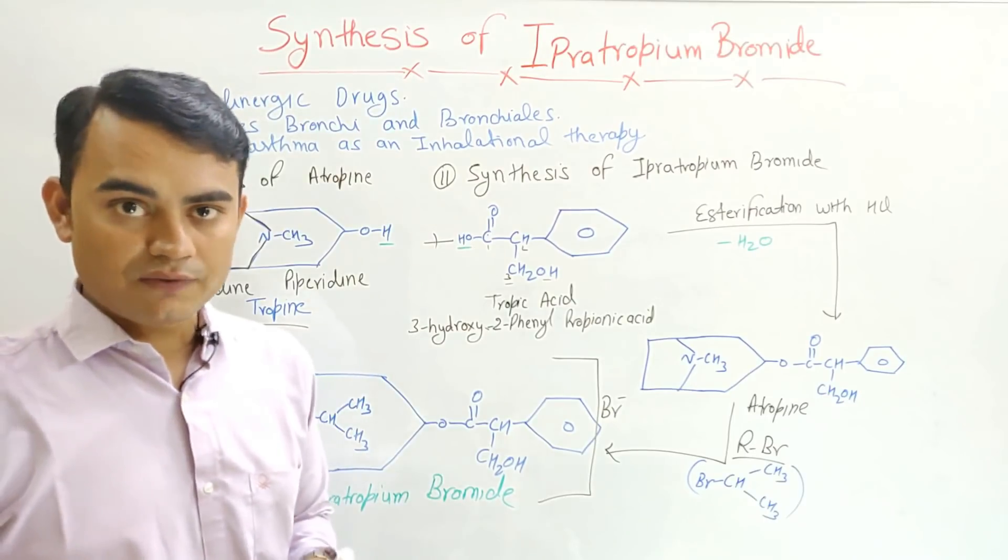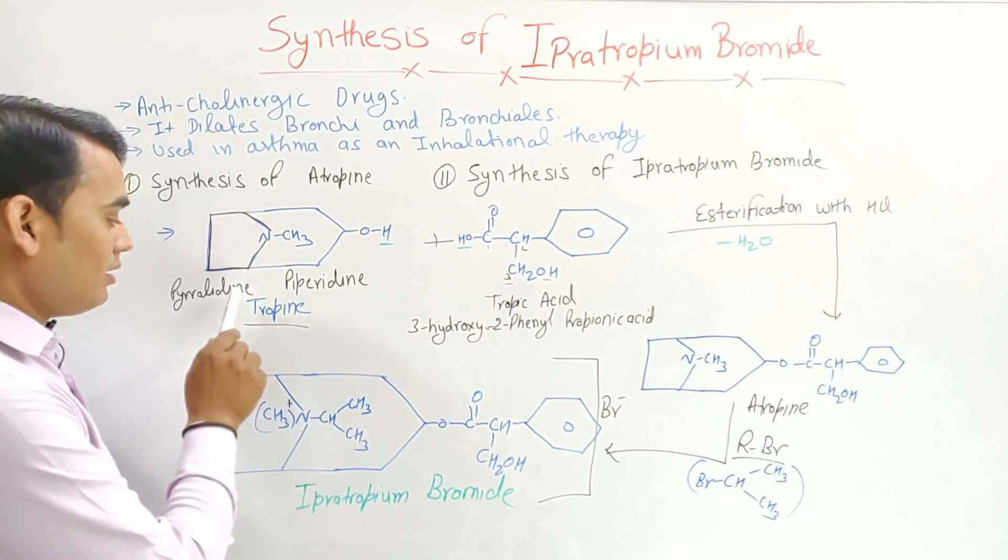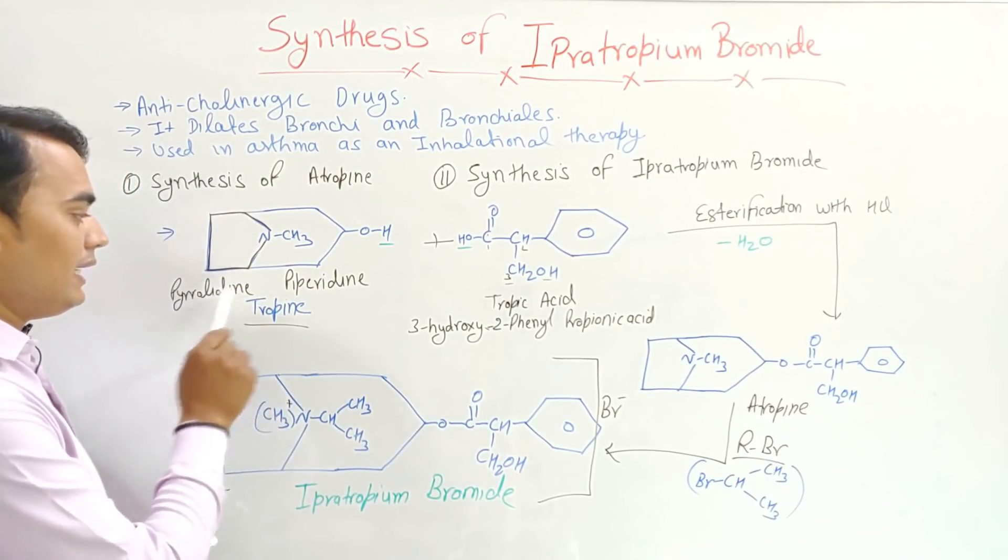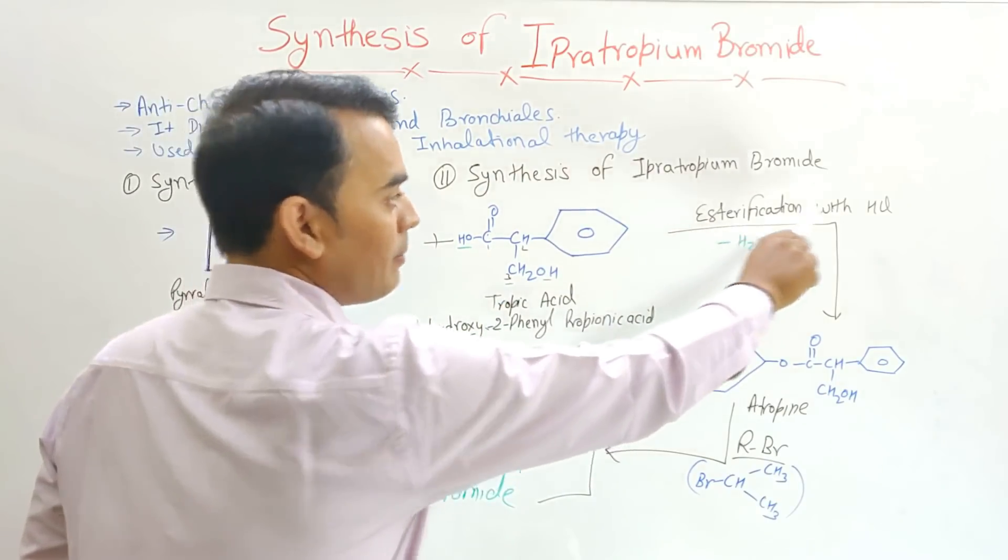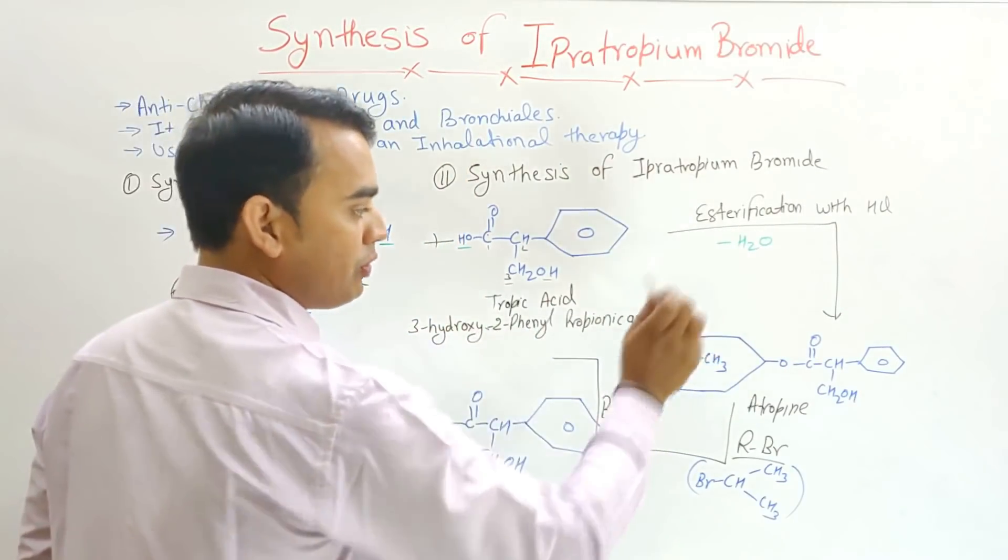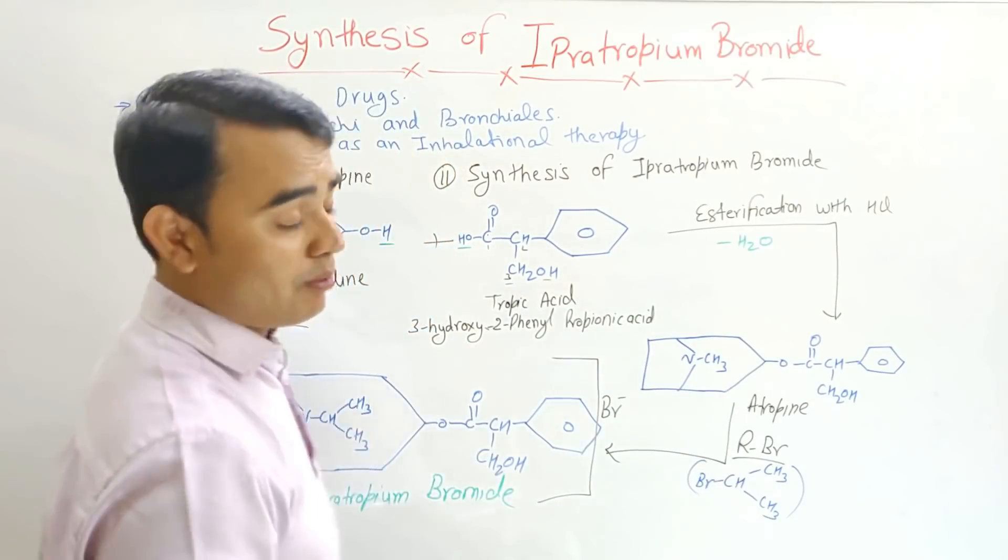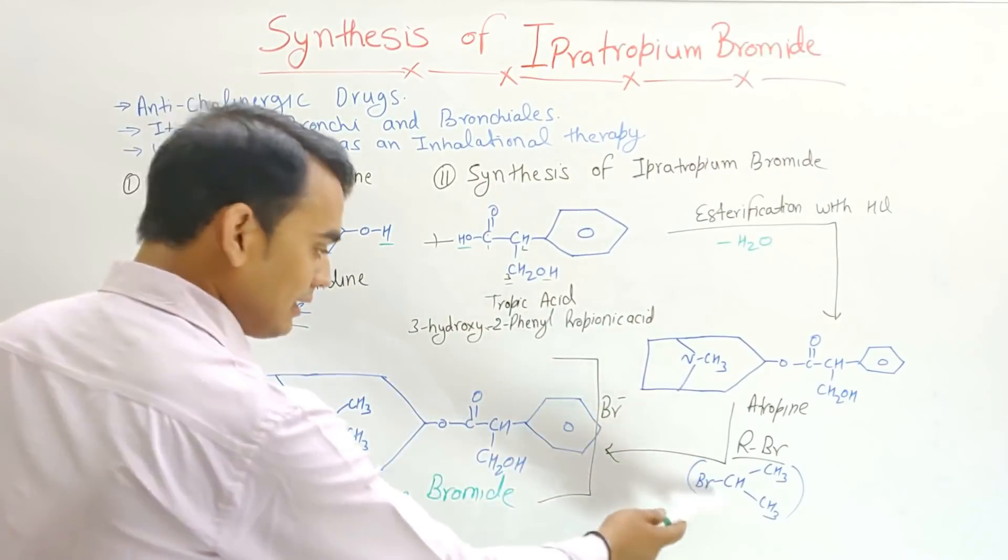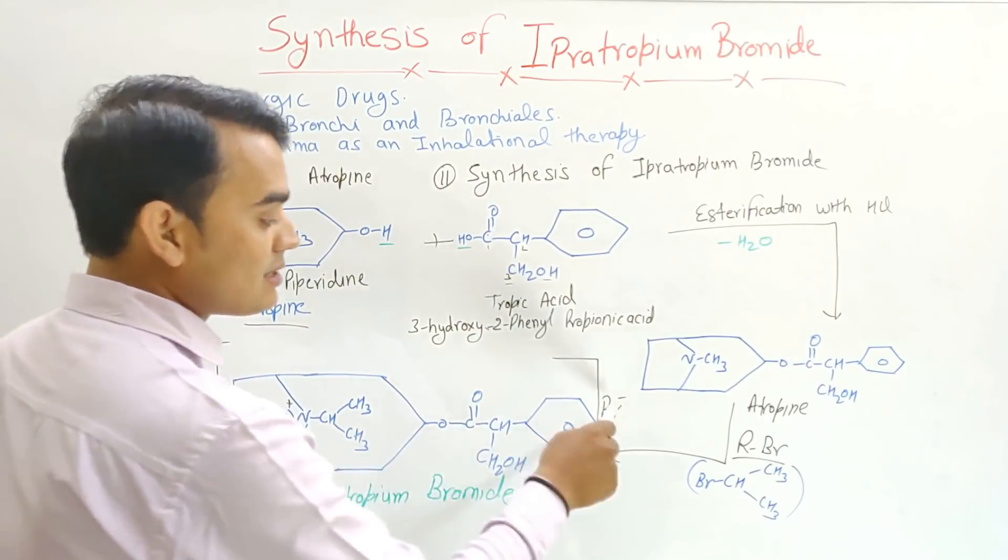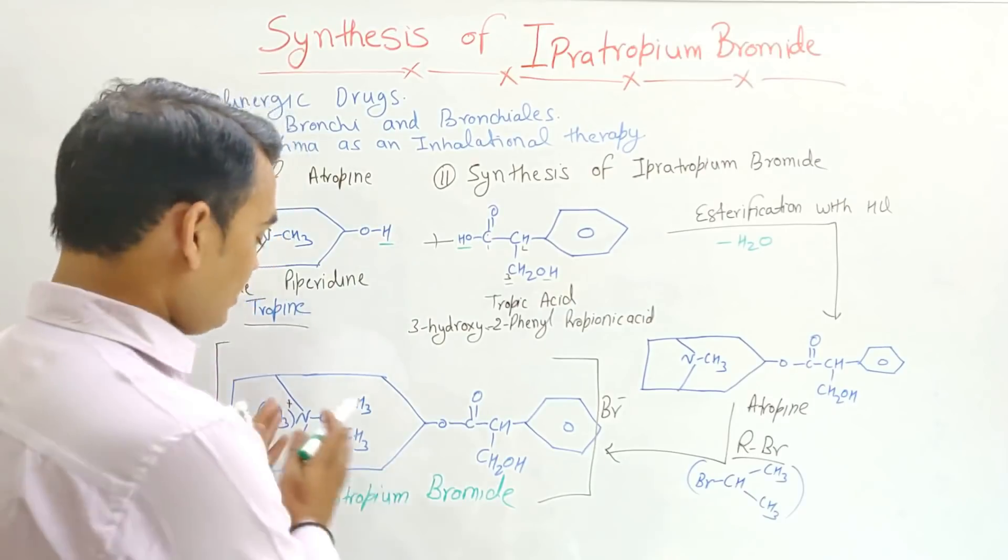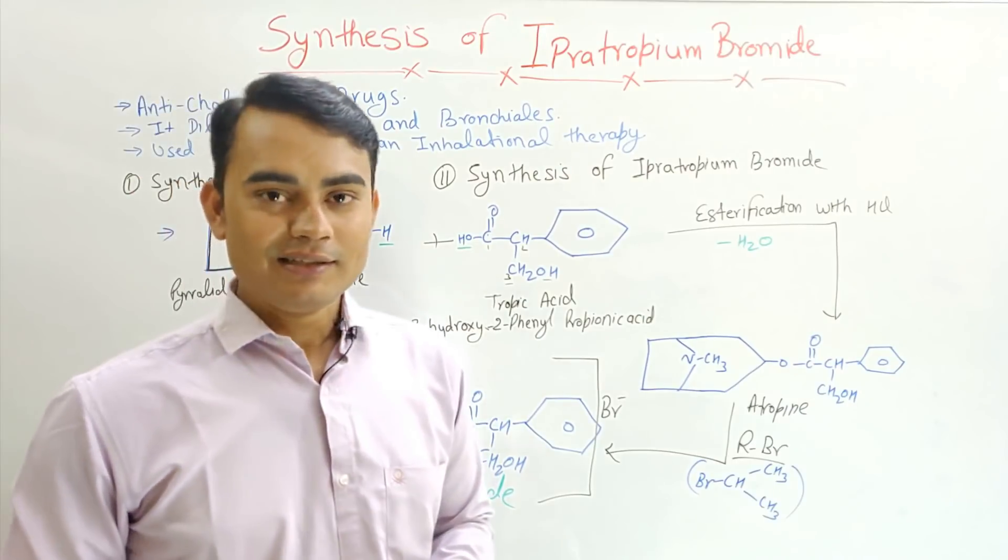This is the overall synthesis of ipratropium bromide. A two-fused ring structure tropin - pyrrolidine and pyranidine - with tropic acid get esterified in the presence of HCl, and the water molecule is removed, ultimately forming atropine. When atropine reacts with isopropyl bromide, the isopropyl group attaches to the nitrogen. This nitrogen has a positive charge, and the bromine neutralizes this positive charge. So overall this is ipratropium bromide. Thank you.